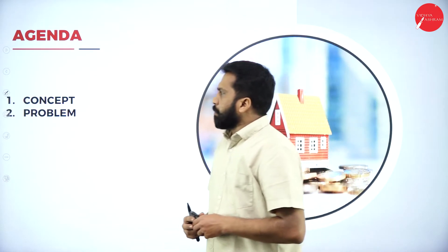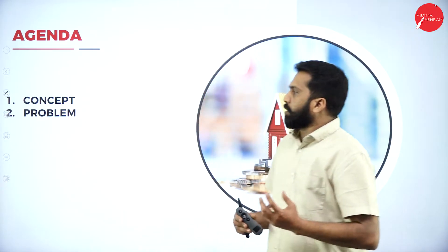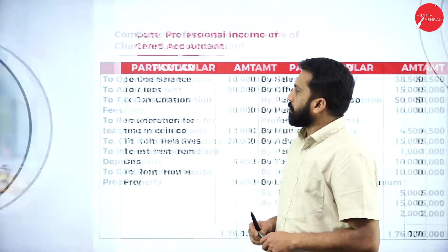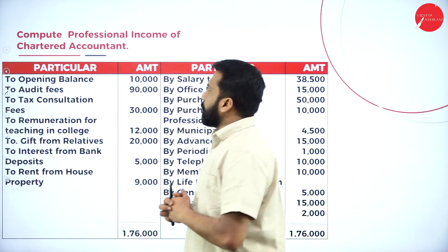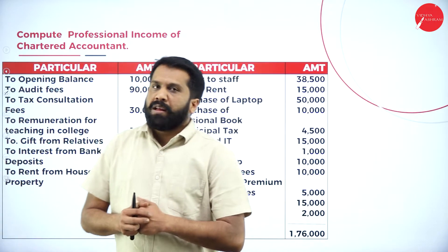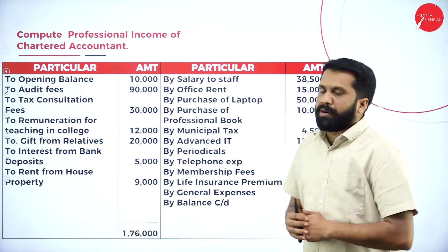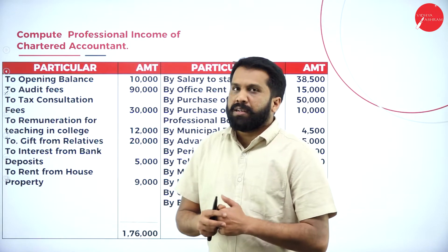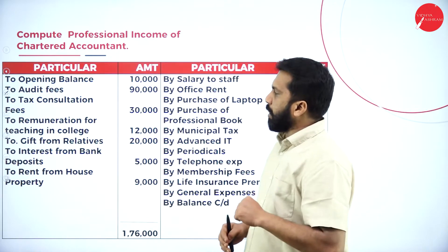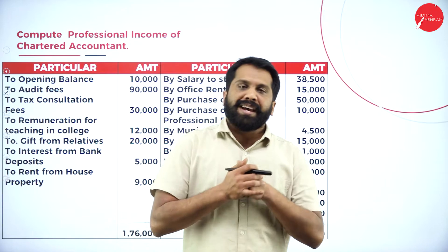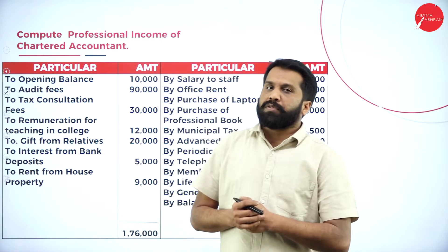The agenda is simple — we have concept and problems. The question is: compute professional income of chartered accountant. You have particular income and expenditure amounts in the table. We have to consider which are professional income and which are professional expenditure, going one by one. Remember, while doing this problem, you should remember that you are a chartered accountant and these are your profession-related items.